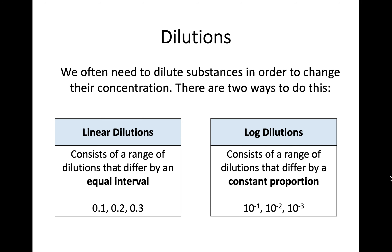First of all, let's talk about dilution. We often need to dilute substances, and by doing that we're changing their concentration. There are two main types of dilution we're going to talk about, and there's a potential pitfall with one of them. First, we have linear dilutions — these are a range of dilutions where each differs by an equal interval. So your concentration might be 0.1, 0.2, 0.3 and so on. The equal interval is the key part of a linear dilution.